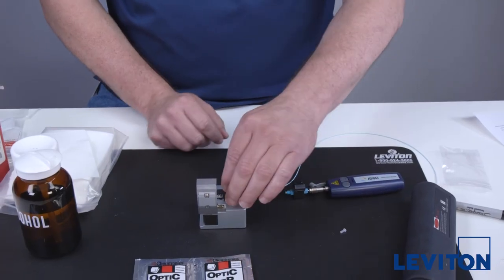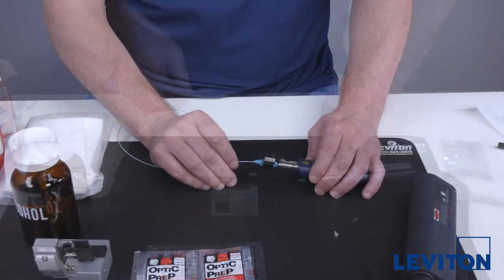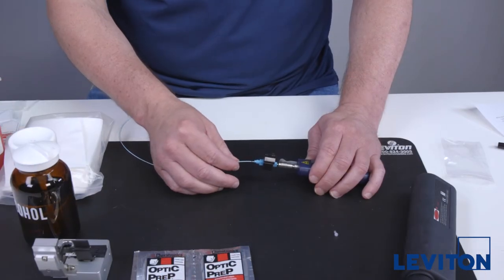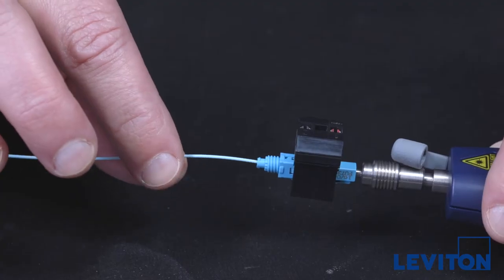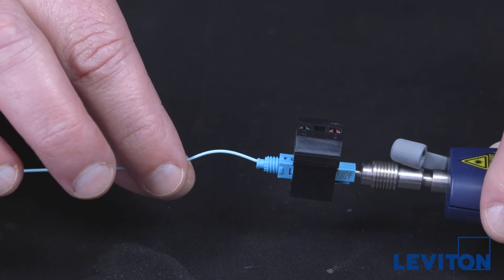Remove the fiber from the cleaver and insert it into the open end of the connector. Slowly insert the fiber into the rear of the connector. Gently twisting the fiber during insertion will help avoid snagging or breaking of the glass. Never force a fiber into a connector.